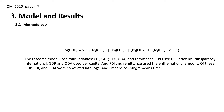The research model used five variables: CPI, GDP, FDI, ODA, and Remittance. CPI used the CPI index by Transparency International. GDP and ODA used per capita values, and FDI and Remittance used the entire national amount. GDP, FDI, and ODA were converted into logs. I denotes country and T denotes time.